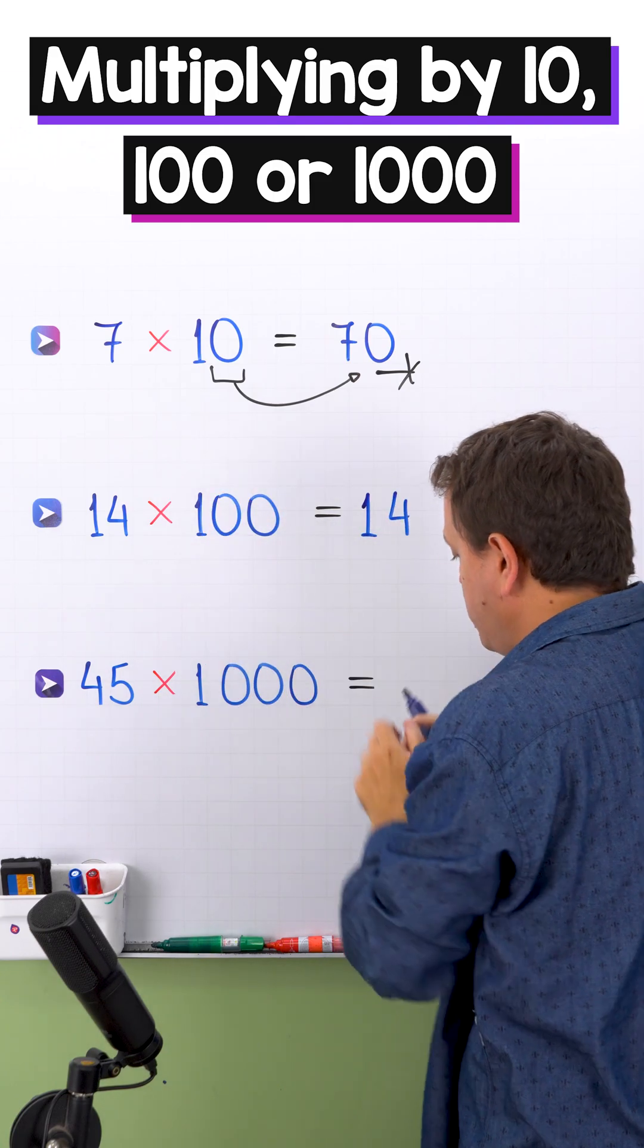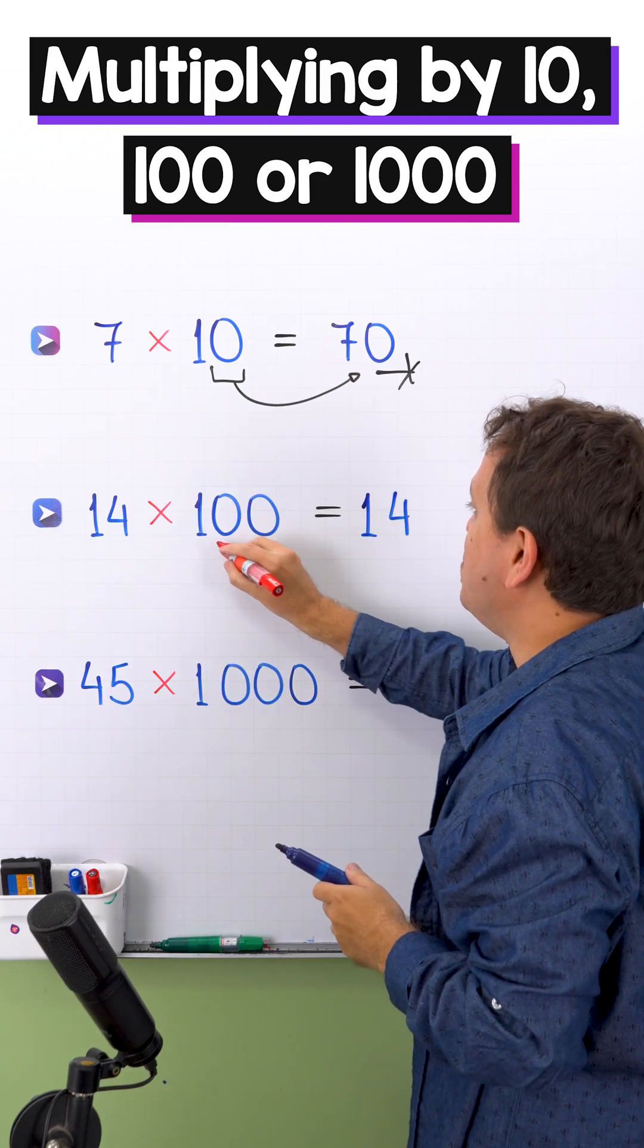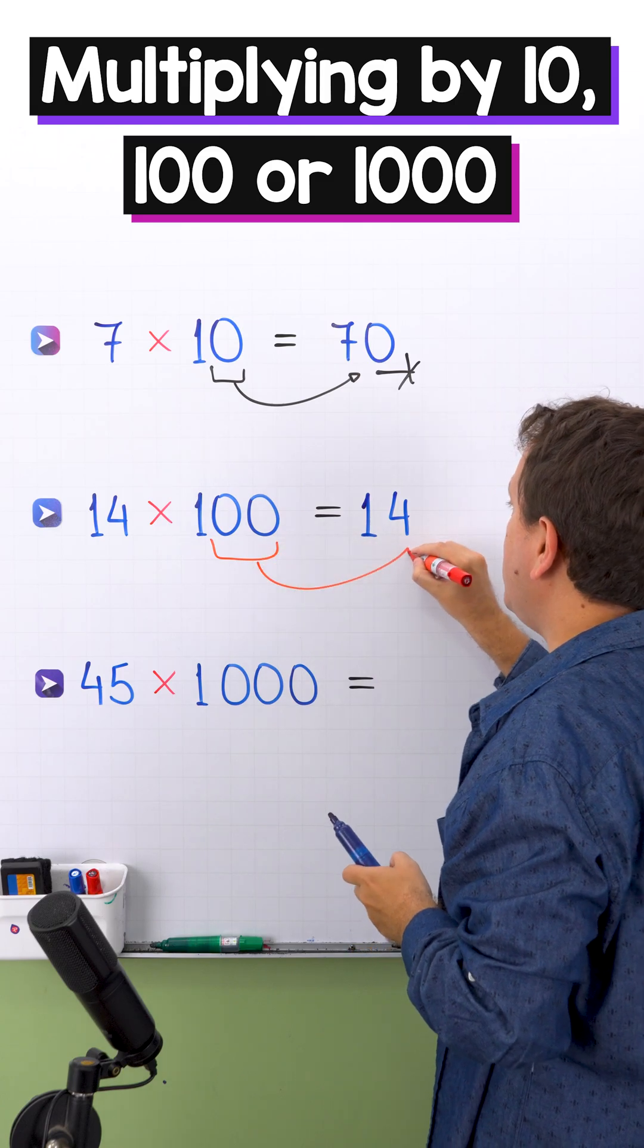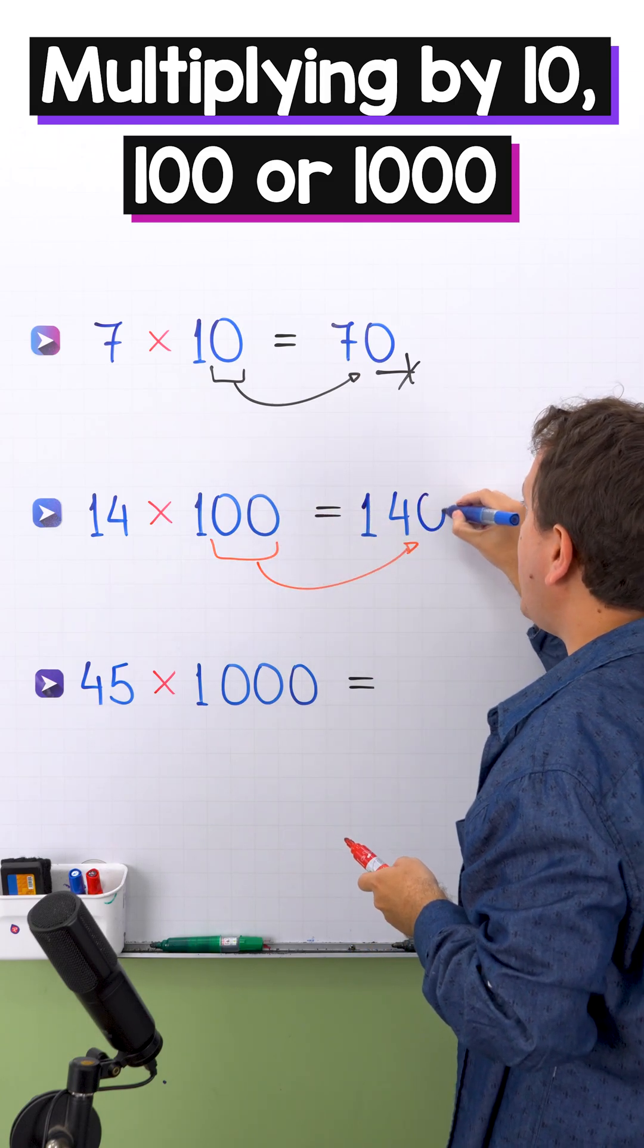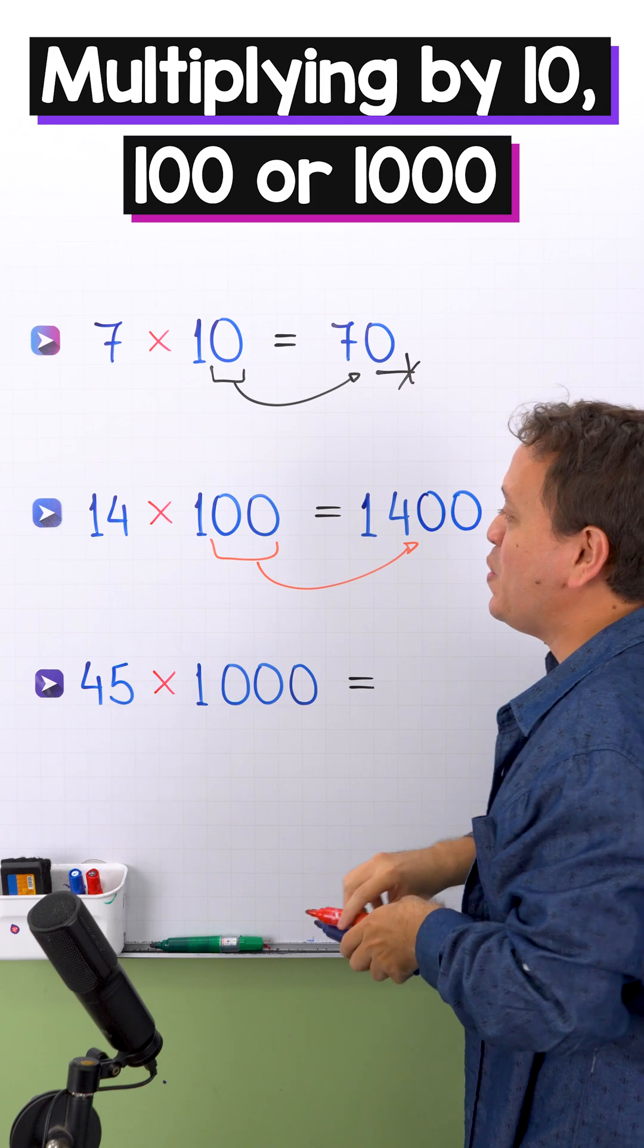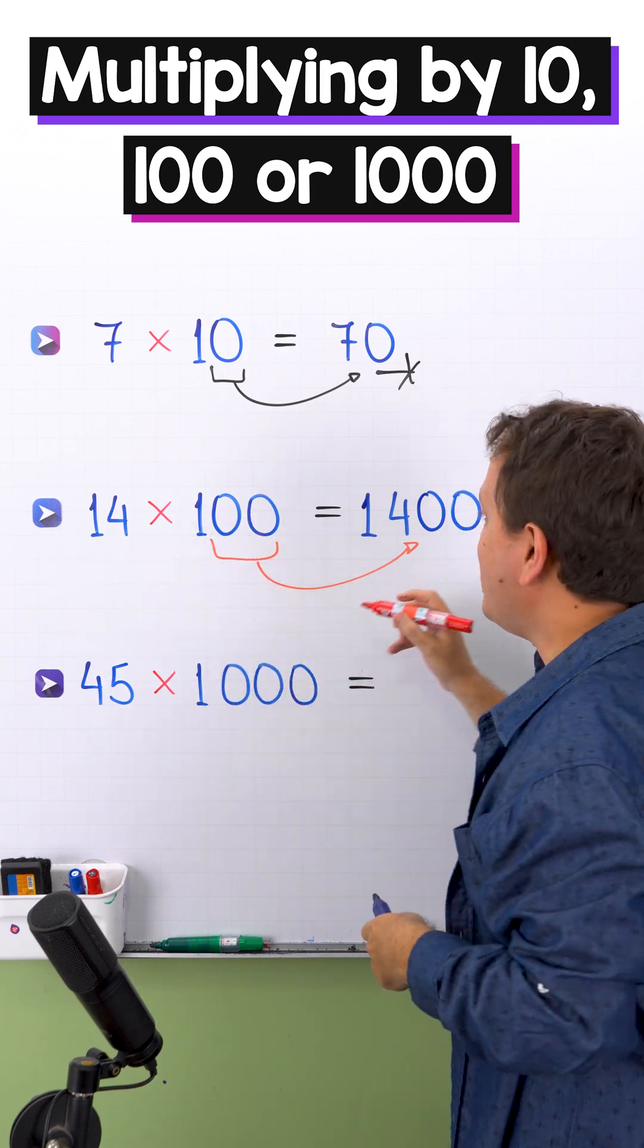Then, we show the 0s that we hid before, and finally, we're going to move these 2 0s to the right. Come over here, 1 and 2 0s, 1 and 2 0s. In that way, 14 times 100 gives us 1,400.